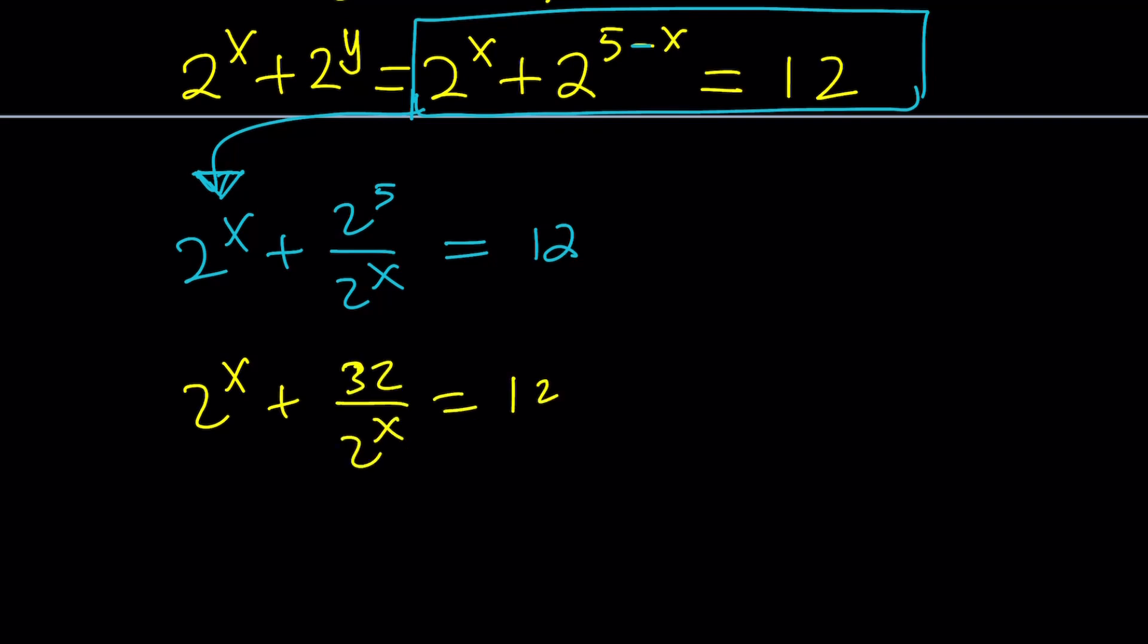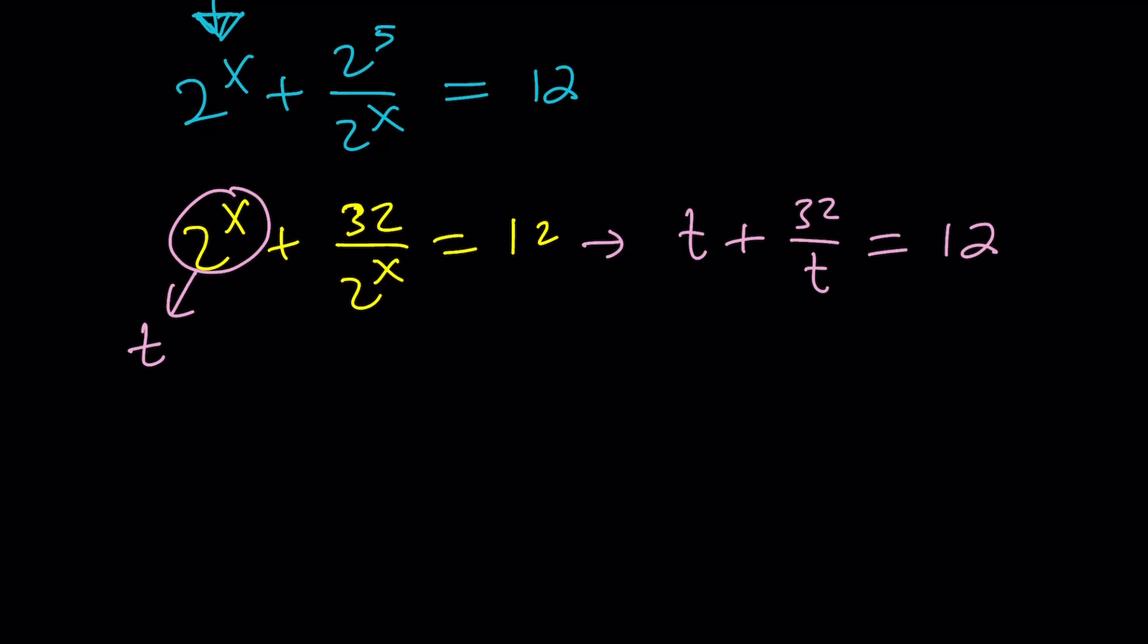And now we're going to replace 2 to the power x with something. Don't use y and don't ask y. So I'm going to pick t for 2 to the power x. And from here, I get t plus 32 over t equals 12. You probably know t is one of my favorite variables and also one of my favorite drinks.